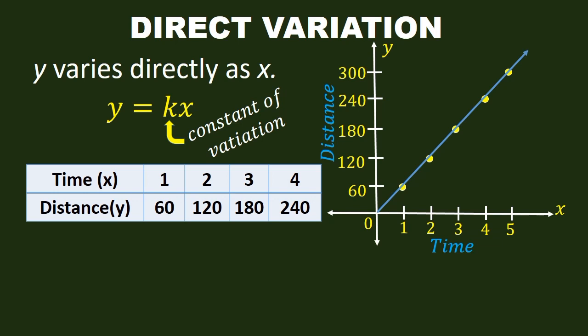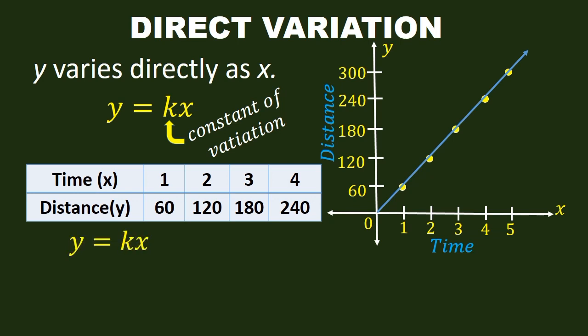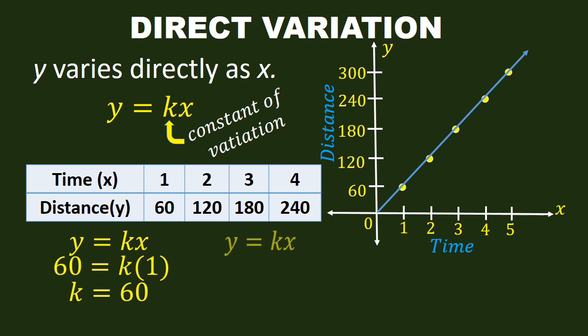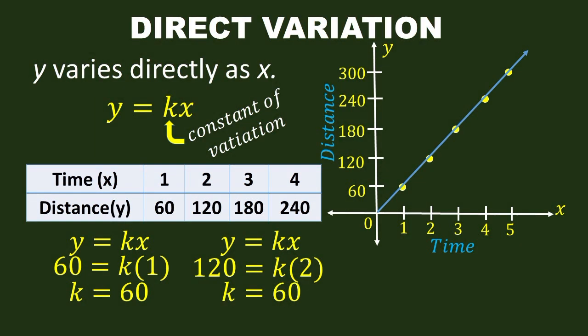From the values of x and y in the table or in the graph, we can find the constant of variation by substituting the values of x and y in the formula. So, y is equal to kx. When x is 1 and y is 60, the constant of variation k is equal to 60. When x is 2 and y is 120, k is also equal to 60. You will notice that the values of k are the same from the first ordered pair up to the next. So, this is the concept of direct variation — the constant of variation must be equal across different ordered pairs in our table of values or in our graph.